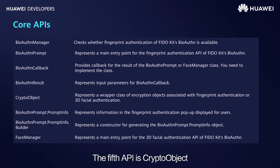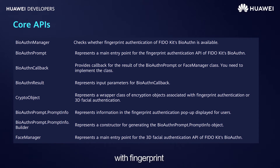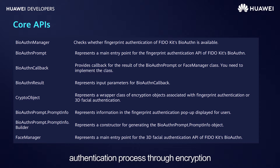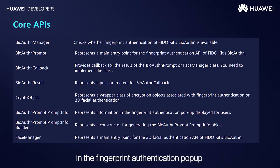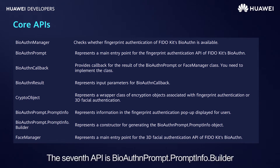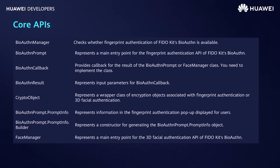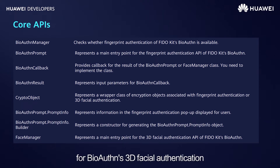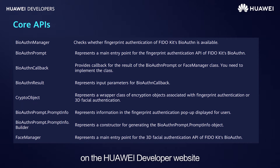The fifth API is CryptoObject, a wrapper class for encryption objects associated with fingerprint or 3D facial authentication. This API helps protect the authentication process through encryption. The sixth API is BioAuthnPrompt.PromptInfo, which represents information in the fingerprint authentication popup displayed to users. The seventh API is BioAuthnPrompt.PromptInfo.Builder, the constructor for generating the BioAuthnPrompt.PromptInfo object. The eighth API, FaceManager, is the main entry point for BioAuthn 3D facial authentication. For more information about these APIs, check the SDK help document on the Huawei Developer website.